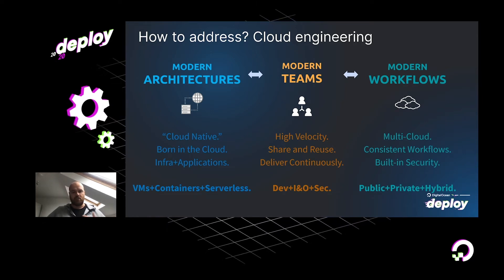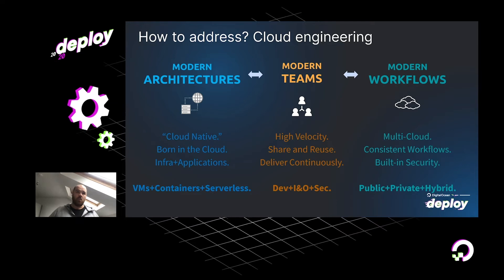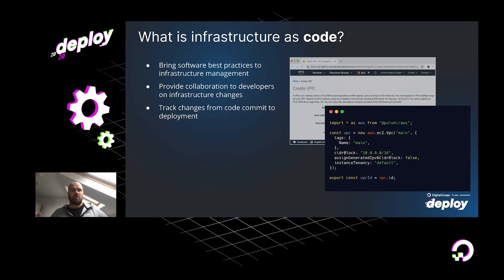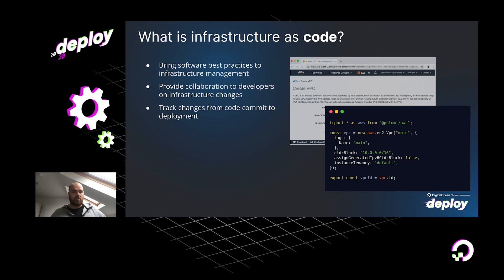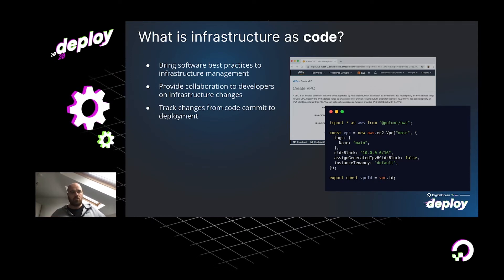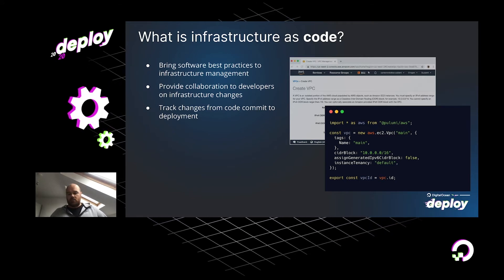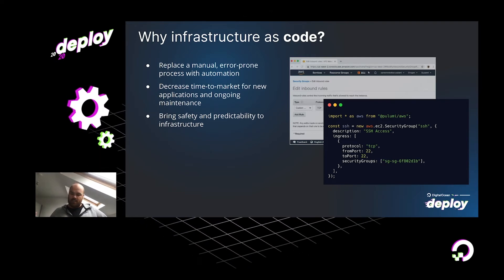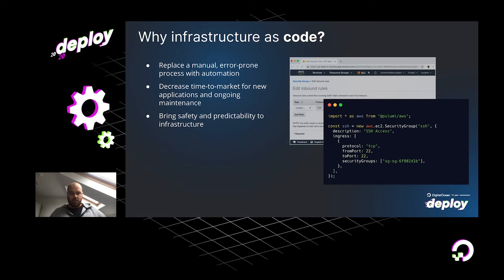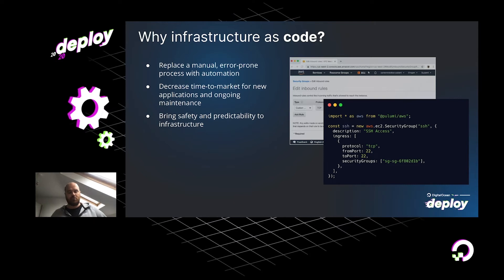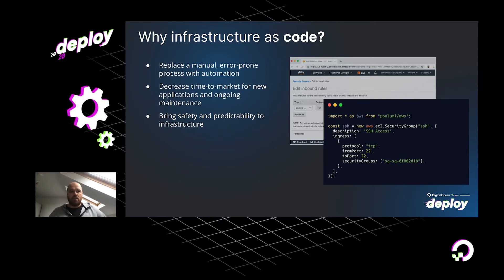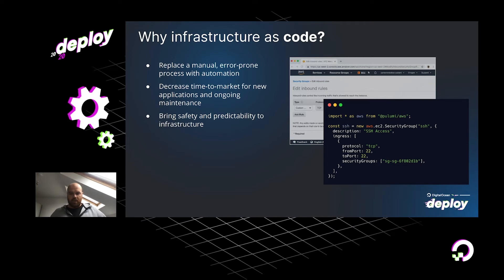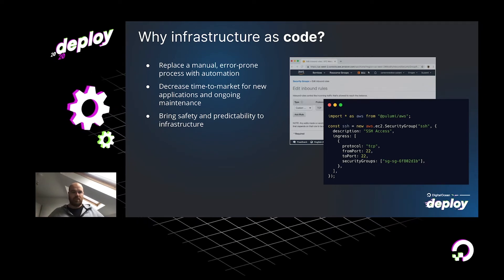Just a very quick recap of what infrastructure as code is. Infrastructure as code brings best practices to our infrastructure management — providing a way to collaborate on infrastructure changes, tracking changes from code commits through to deployment. It's important because it replaces manual error-prone processes with automation. It's faster to get code into production because it's automated, with pipelines for testing. Most importantly, it brings safety and predictability to infrastructure because we can see and plan in advance what it's going to do, and because it's idempotent.